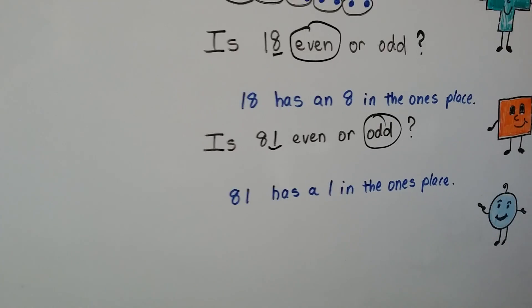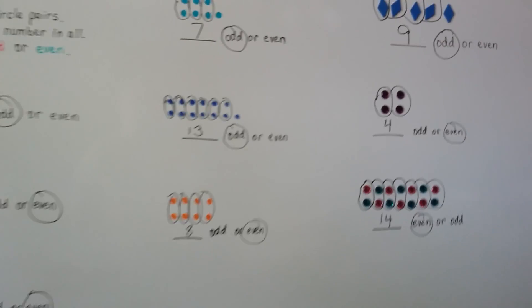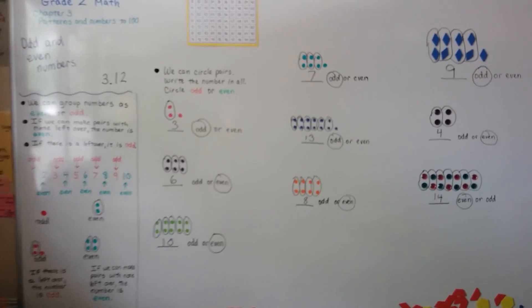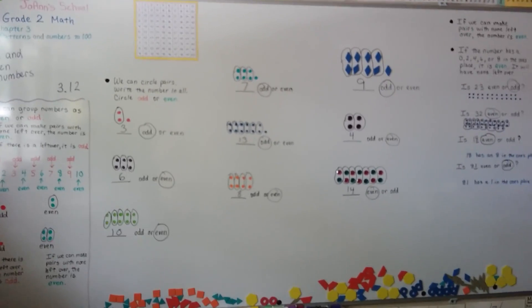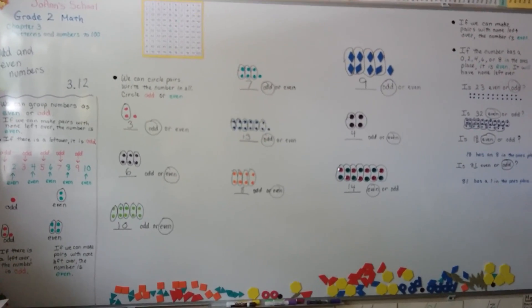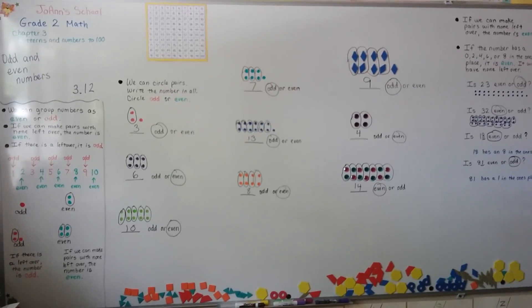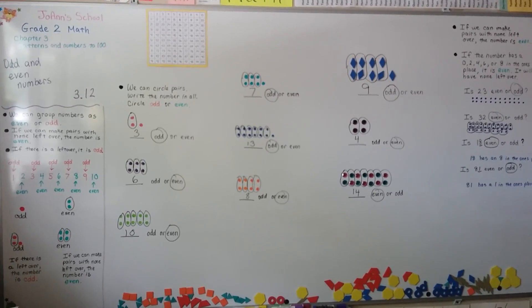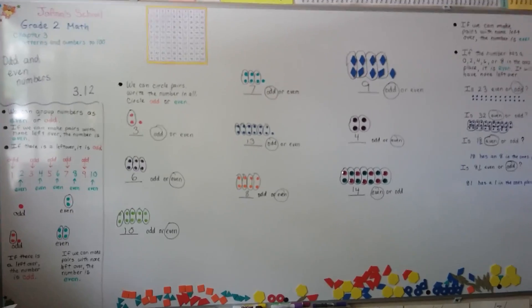All numbers — every one of them — is either an even number or an odd number. We can tell if it's an even number if we count them and they make pairs with none left over. If it has a leftover, then we know it's odd. I'll see you next video. Bye!